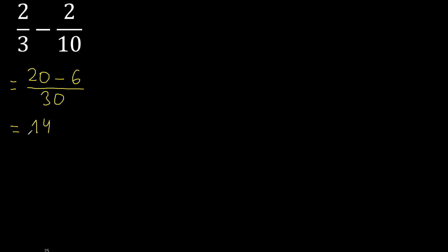14 over 30 can be simplified because both can be divided by the same number. Divided by 2: 14 divided by 2 is 7; 30 divided by 2 is 15.